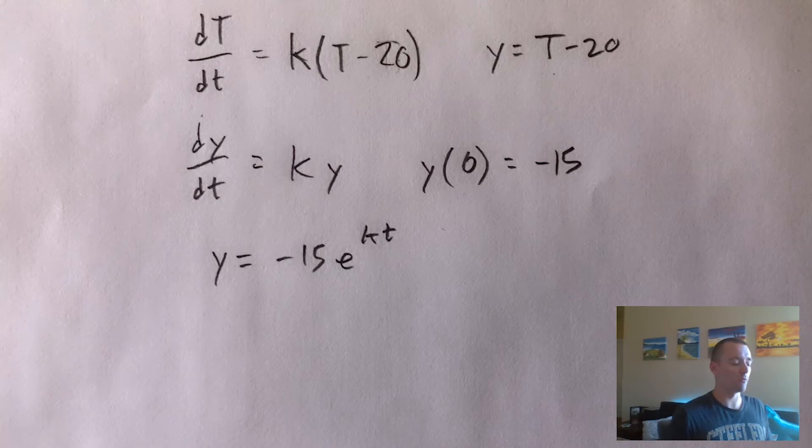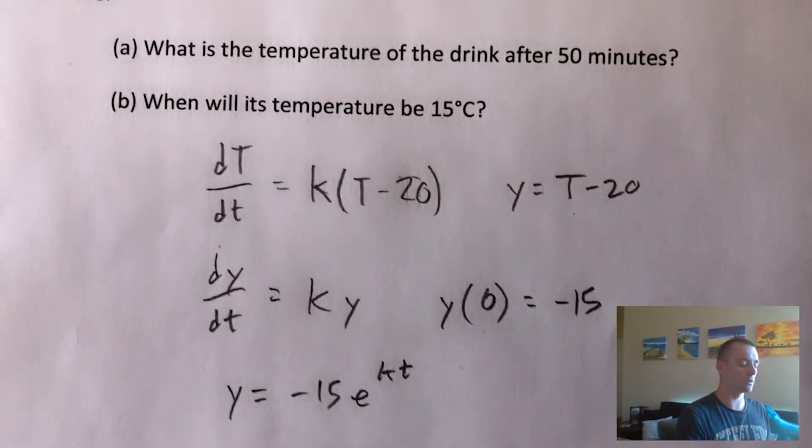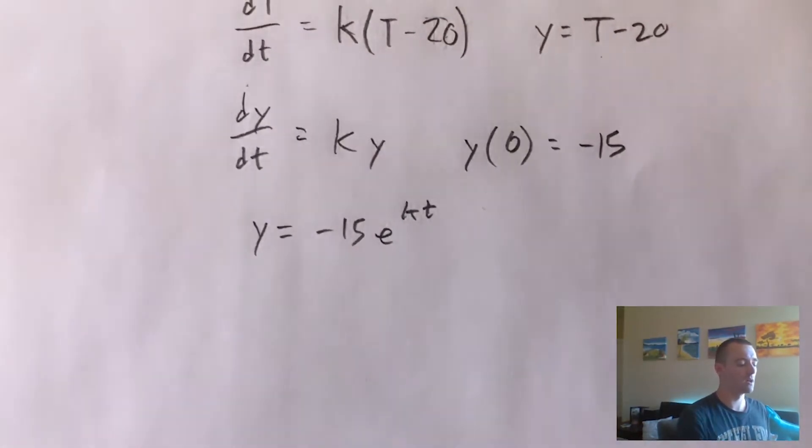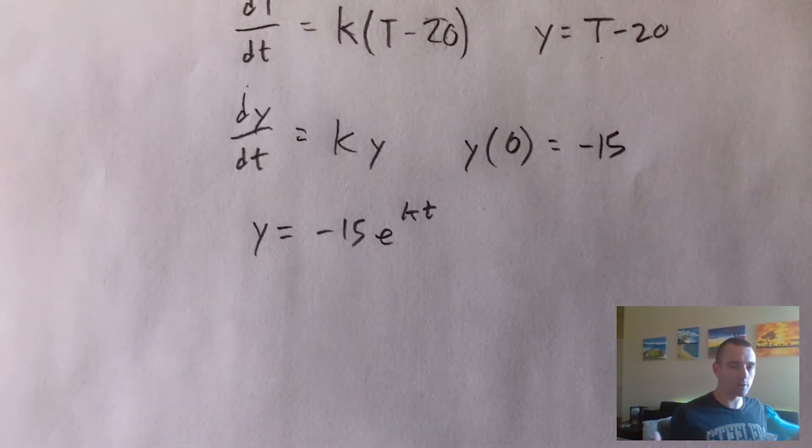And to do that, what we want to do is there's going to need to be another point, basically, that we were given that we're going to have to use, or in other words, another measure of the drink's temperature at a certain time. Right? So let's just say that this is, you know, we could call the units, whatever we want.